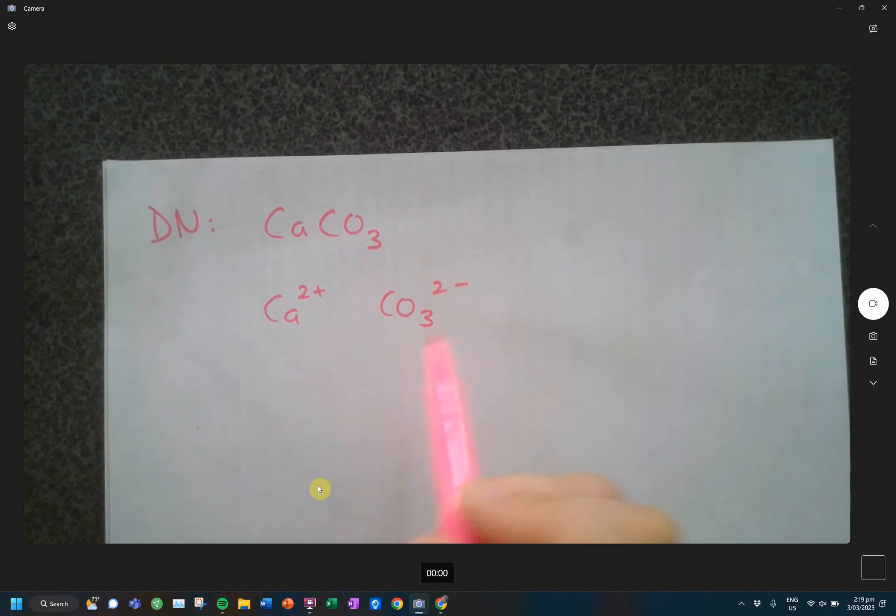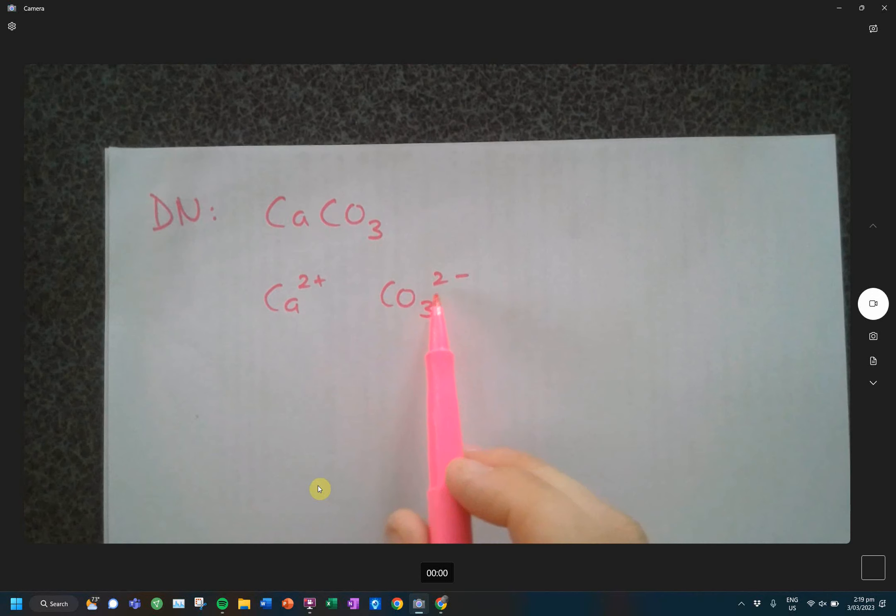And then the carbonate, that's one of your polyatomic ions. So you had that on your little summary page that I gave you yesterday. You also have it on that pink resource sheet. On the back, you'll have a table of ions, and you'll see that its charge is 2-. Are we good so far?